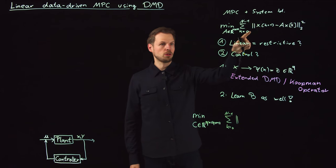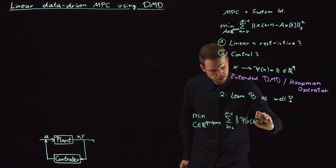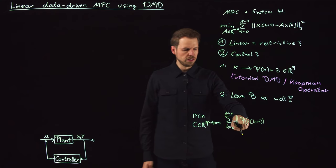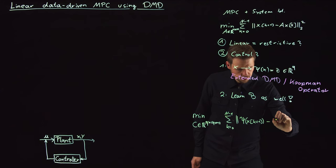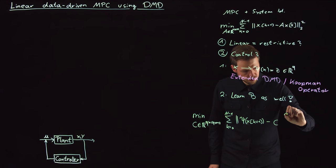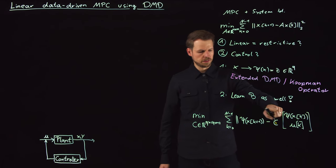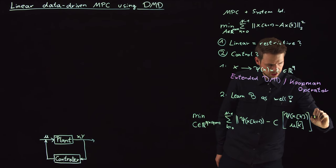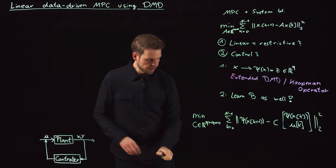But now in terms of the lifted space, so this is Psi of X, K plus 1, or Z, K plus 1, minus the C matrix times Psi of X, K, U, K. So what I'm doing is I'm simply concatenating the input and the state at time step K. So the 2 norm of this.